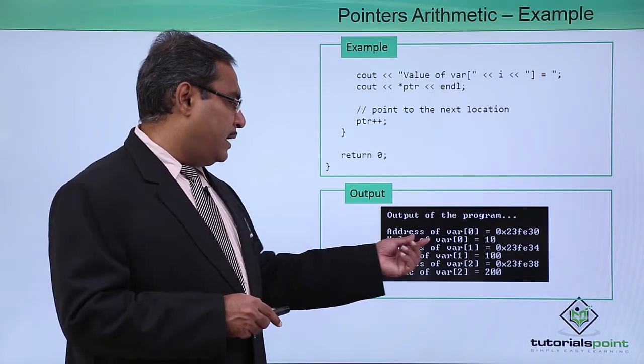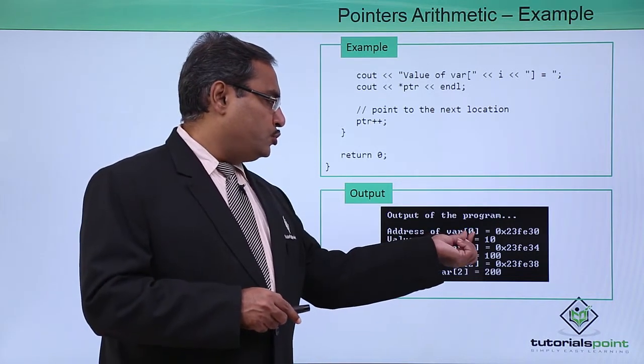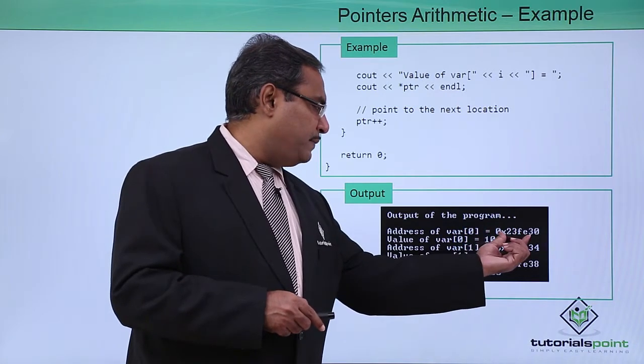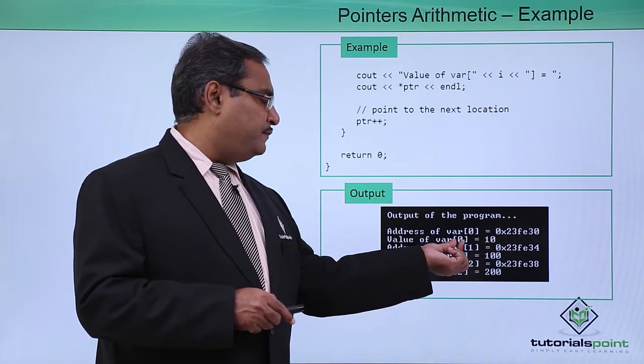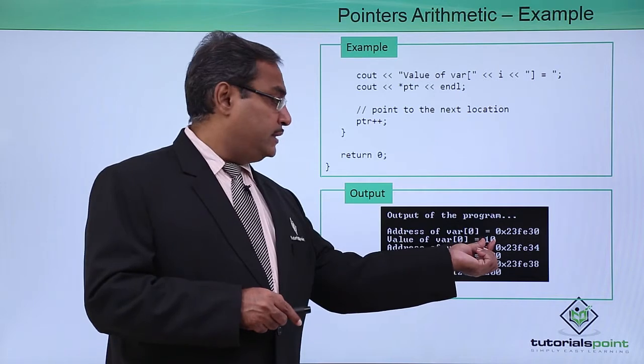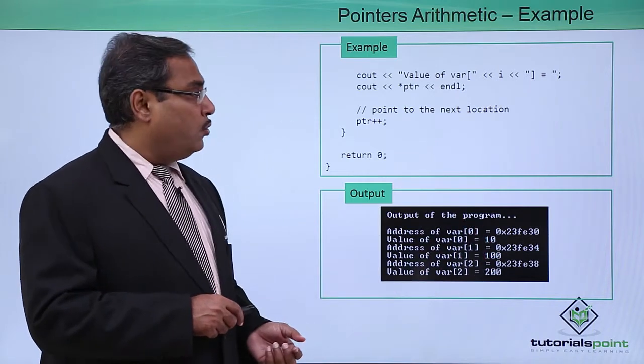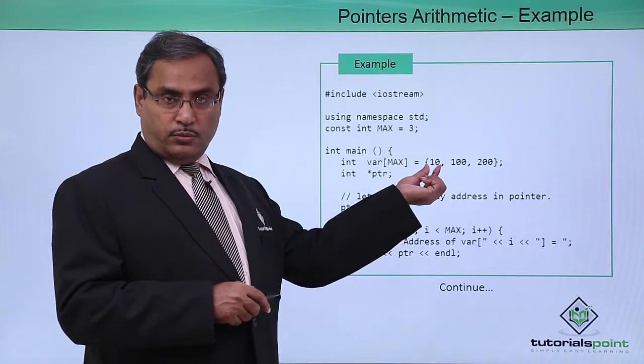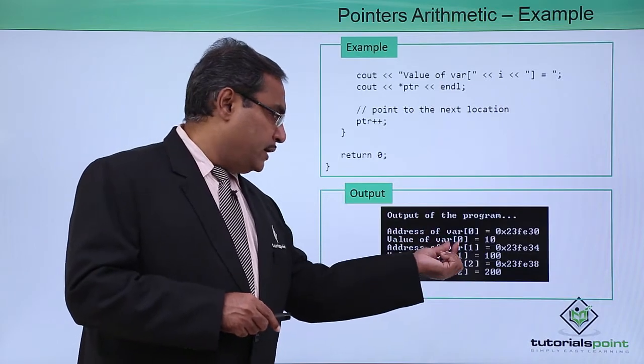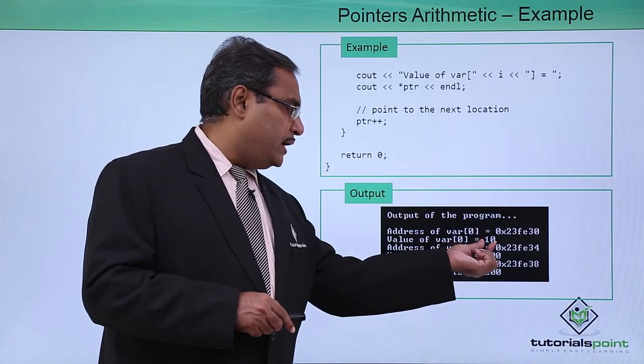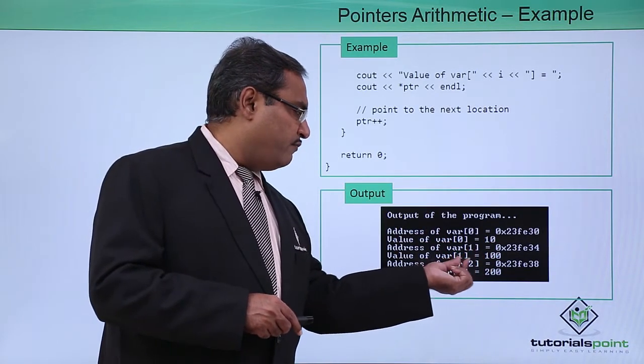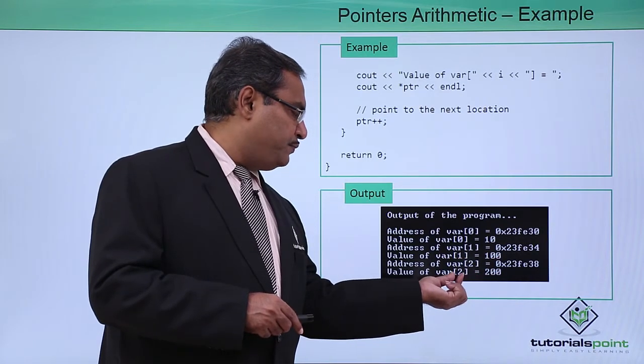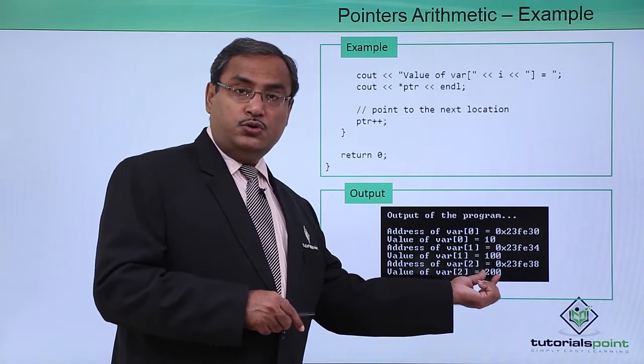Now we can find that here we have var of 0. 0 is the subscript, this is the respective address, var[0] contains 10 because the first data was 10. At subscript 0 the value is 10, at subscript 1 the value is 100, at subscript 2 the value is 200.